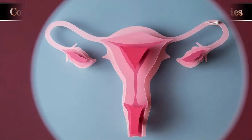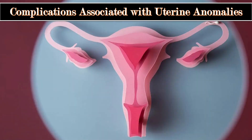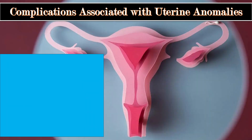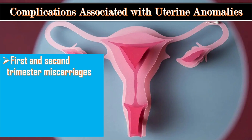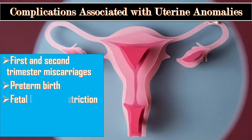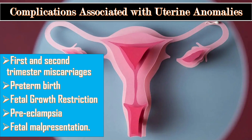Depending upon the type and severity of congenital uterine anomalies, there may be an increased risk of first and second trimester miscarriages, preterm birth, poor growth of the baby, preeclampsia, and difficult positioning of the baby, known as fetal malpresentation.